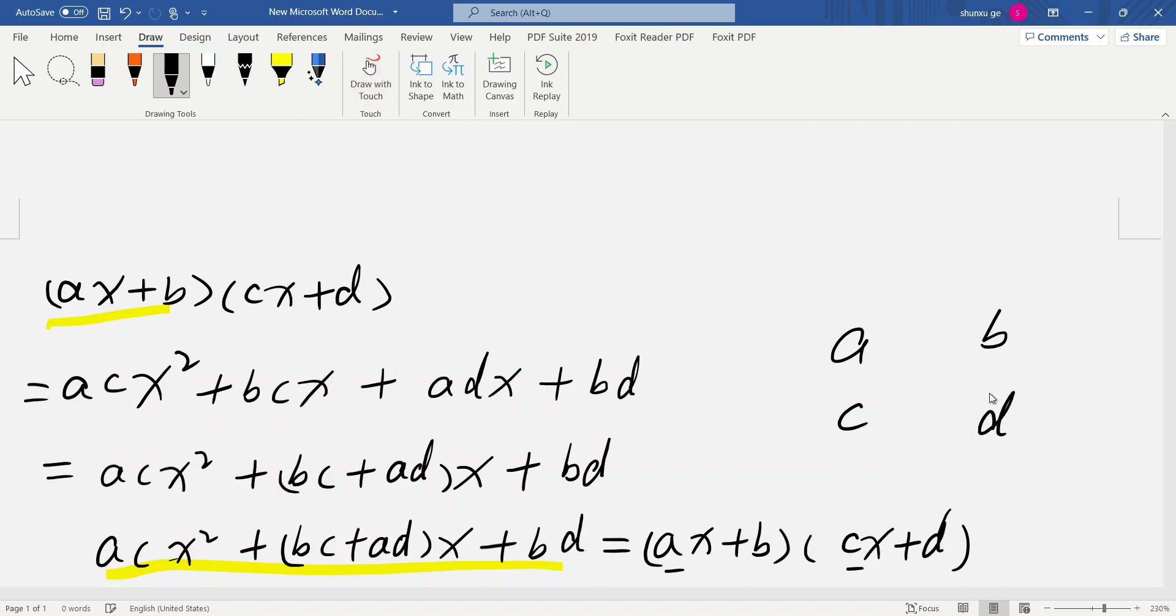Okay, ac, a times c is here, and b times d is here. So ad is here, ad, and bc, b times c is here. So a term like this, we have to factorize them like the right side.